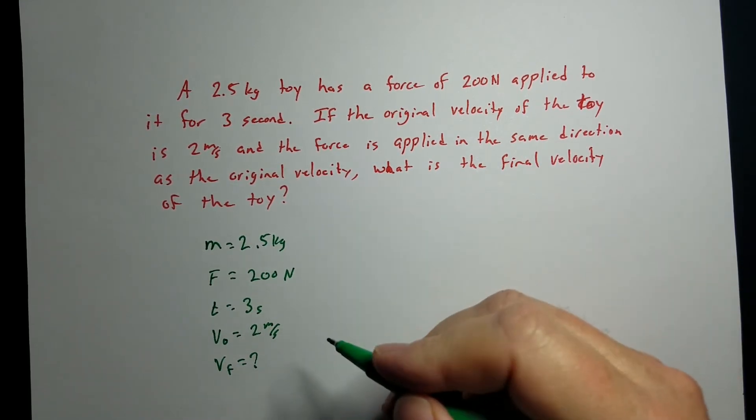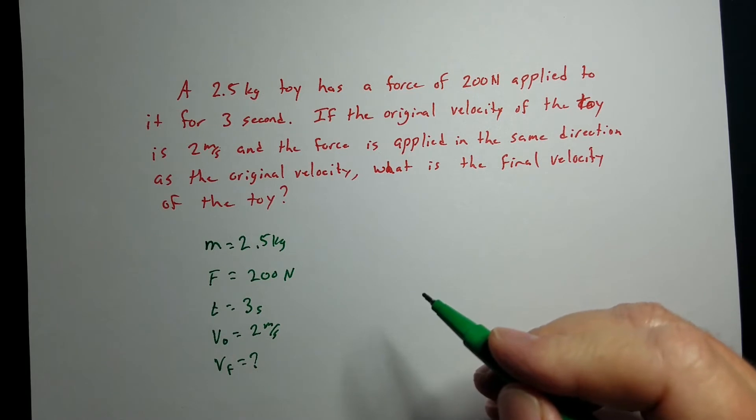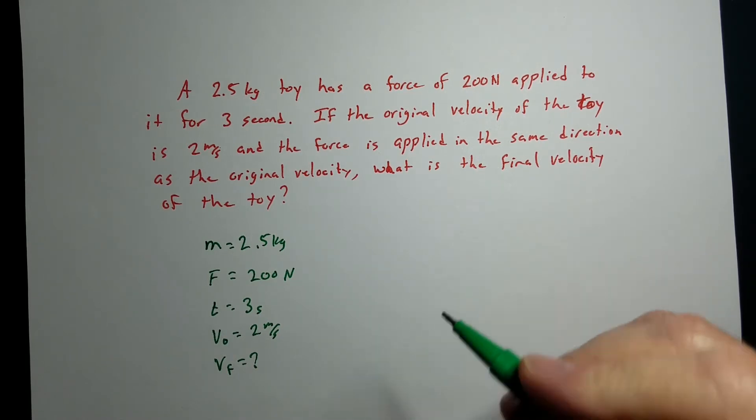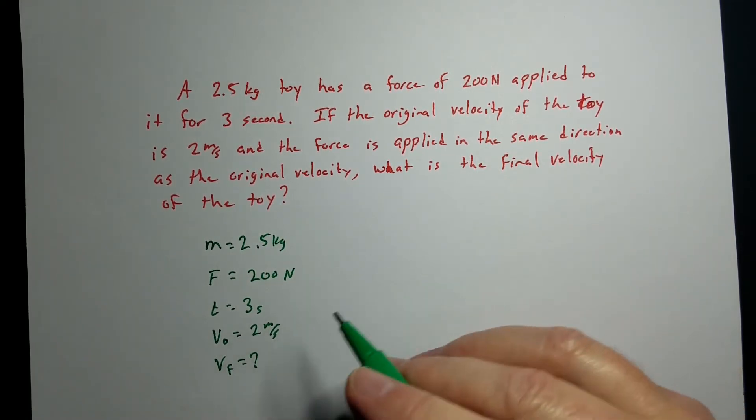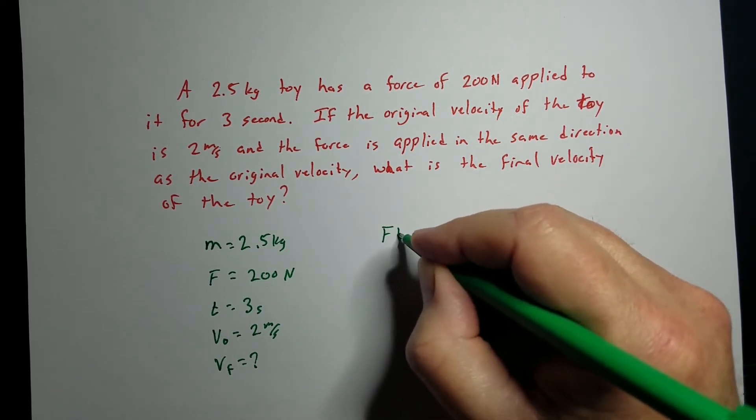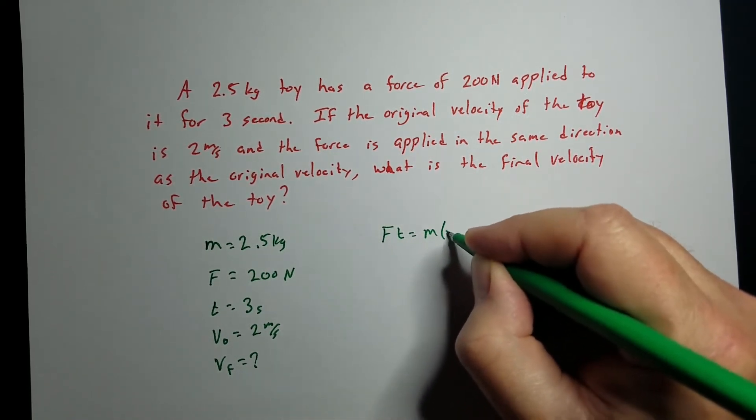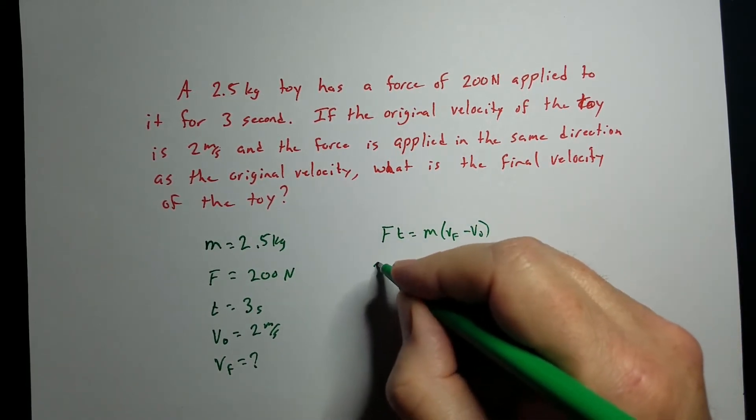Alright, so I've got this huge list of information. I'm not asked for a specific momentum or impulse. I want to know a final velocity. Now, we can go back to the kinematics equations and do it, or we can look at it through this lens of momentum. So, Ft equals M Vf minus V0.